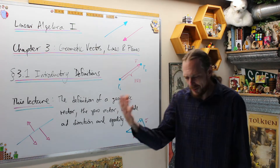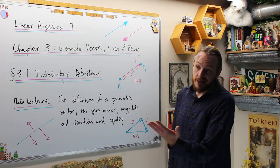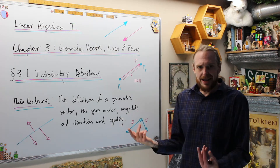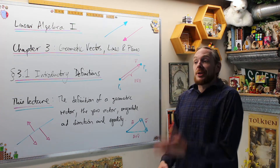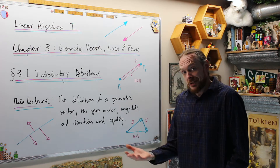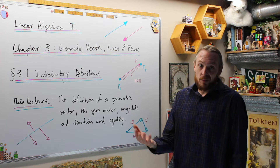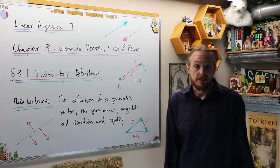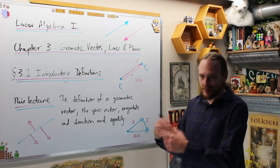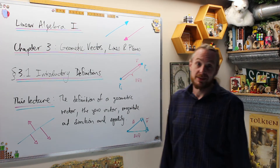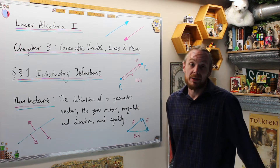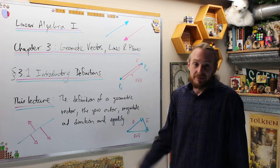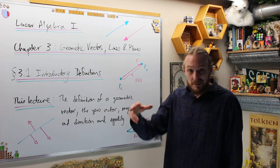Essentially what we're going to do is define an object called vectors, then we need a zero vector, then we need to know when vectors are equal and not equal. We're going to define addition and scalar multiplication, and then build all the same ten axioms to build this into a vector space — just like we do with matrices.